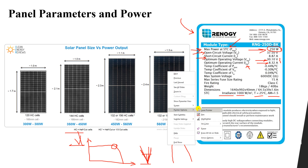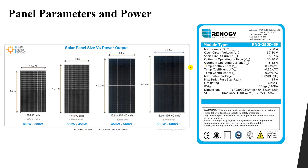There are another three parameters in the datasheet of the panel: the temperature coefficient of Pmax, the temperature coefficient of Voc (open circuit voltage), and the temperature coefficient of Isc (short circuit current). The temperature coefficient of Pmax tells us how power changes with temperature. Our Pmax equals 250 watts at STC.